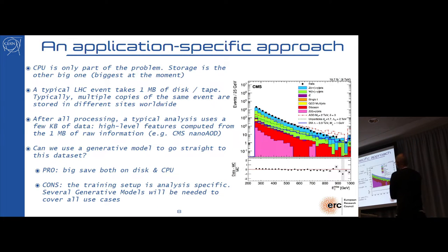This motivated a little bit of study, which starts from a few other considerations of how typically analysis goes. The CPU is not the big part of the problem. Storage is the big part of the problem. A typical LHC event takes a megabyte of disk. If you have an accurate simulation of all the detector, it takes a megabyte per event. This consumes tape, which is relatively cheap, but consumes disks, and this is expensive.